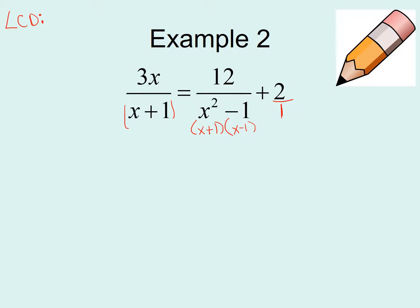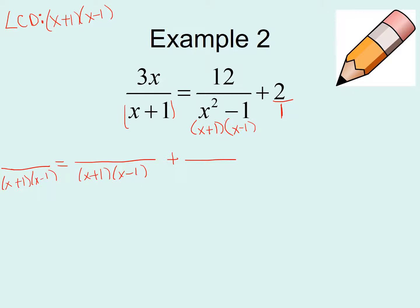To find the least common denominator, I need (x + 1) and (x - 1). Setting up fractions, each denominator will be (x + 1)(x - 1). For 3x over (x + 1), to get to (x + 1)(x - 1) I multiply by (x - 1) — top and bottom. Distributing 3x gives 3x squared minus 3x. For 12 over x squared minus 1, that denominator is already (x + 1)(x - 1), so the numerator stays as 12.